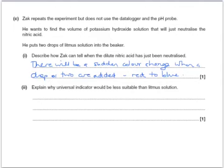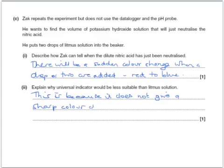The second question says explain why a universal indicator would be less suitable than litmus solution. This is because it does not give a sharp colour change. So, of course, it's more difficult to tell when it's just changed pH.